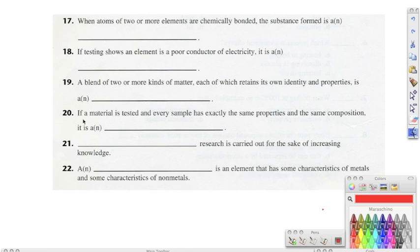Number twenty, if a material is tested and every sample has exactly the same properties and the same composition, it is a pure substance. Number twenty-one, blank research is carried out for the sake of increasing knowledge, and the correct answer should be basic. Number twenty-two, a metalloid is an element that has some characteristics of metals and some characteristics of non-metals.